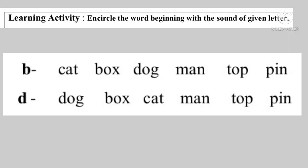Apan atayek activity ke na rahot. Learning activity: encircle the word beginning with the sound of the given letter. As for the answer, the word is that the noun starts with the written letter.